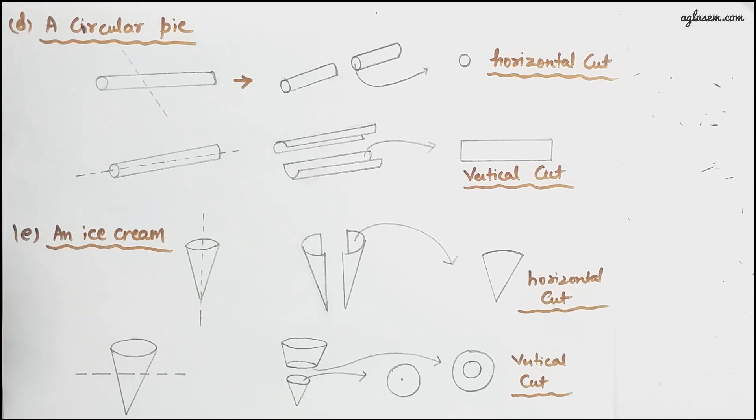For an ice cream cone, obviously the cone will be cut into two pieces if it is a horizontal cut. And if it is a vertical cut, you will get a smaller cone and a hollow cone type structure with two slants.